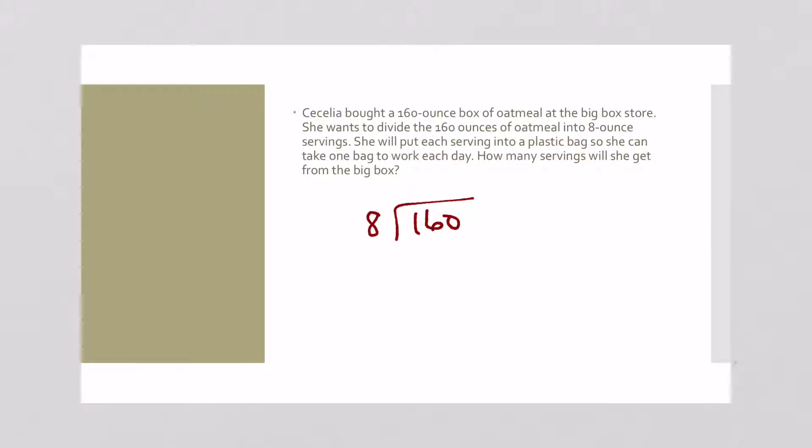8 won't go into 1 but it will go into 16 twice. 2 times 8 is 16. You subtract and you get 0. Bring down that 0. 8 will go into 0, 0 times. So what does 20 mean? 20 is our answer but what does it mean in this situation? It is how many servings she will get. So you need to always label your final answer. So 20 servings.